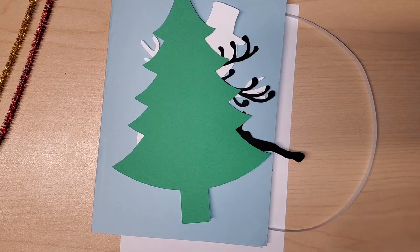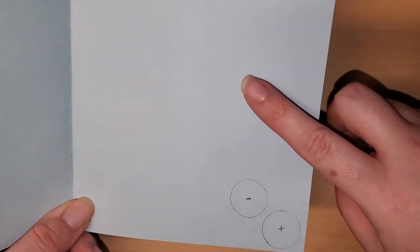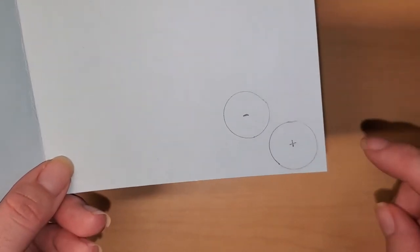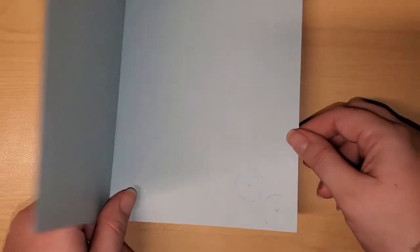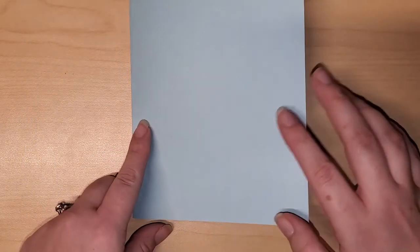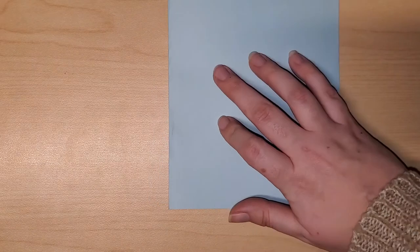So let's get started. We are going to start with the front of our card facing us and you could tell which side is the front because if you look inside your card the back side of your card is going to have a couple of circles with a plus and a minus. Those circles are where we're going to place our battery later on.